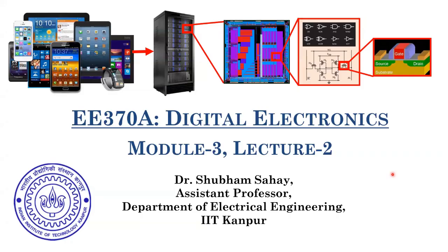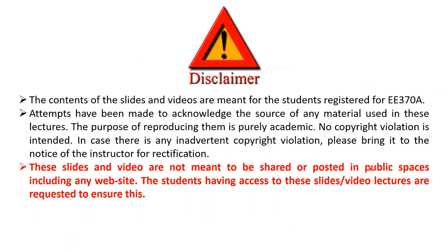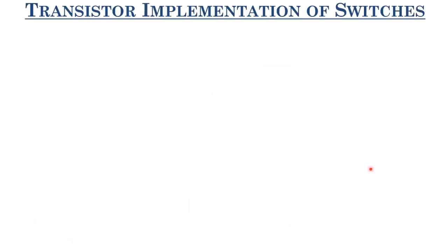Hello everyone. Welcome to the second lecture of the third module. The disclaimers remain the same. Today we will be looking at transistor implementation of switches. In the last lecture we were discussing about how we can realize inverters or non-inverting buffers when we have a switch — a positive switch or a negative switch — and resistance.